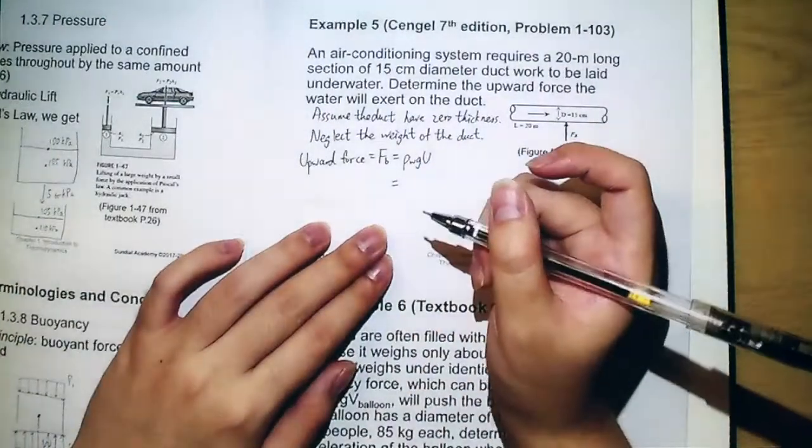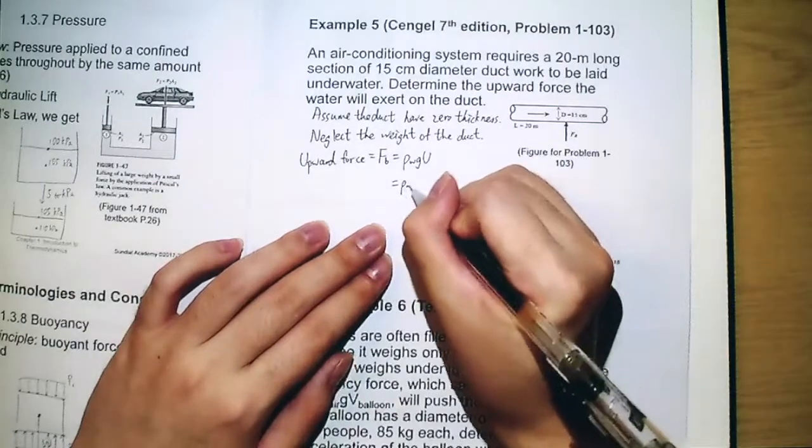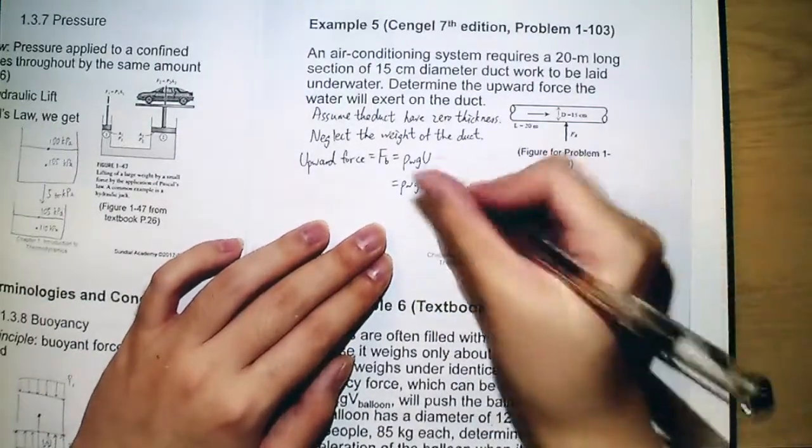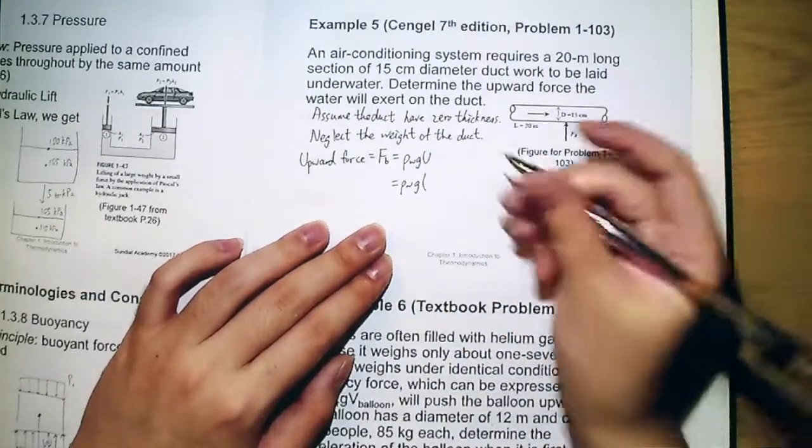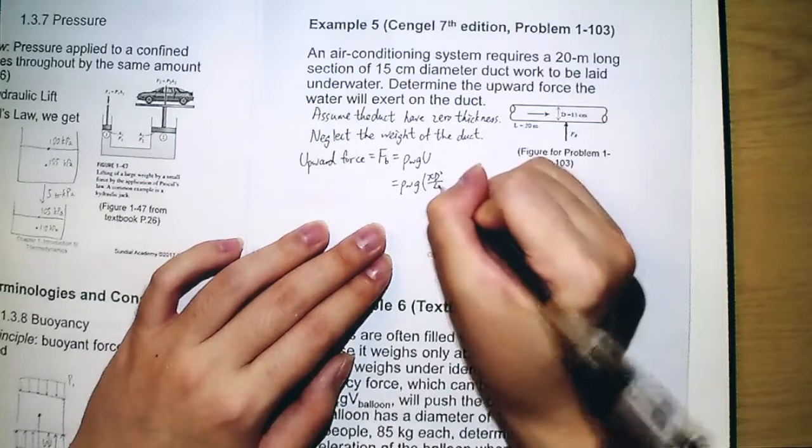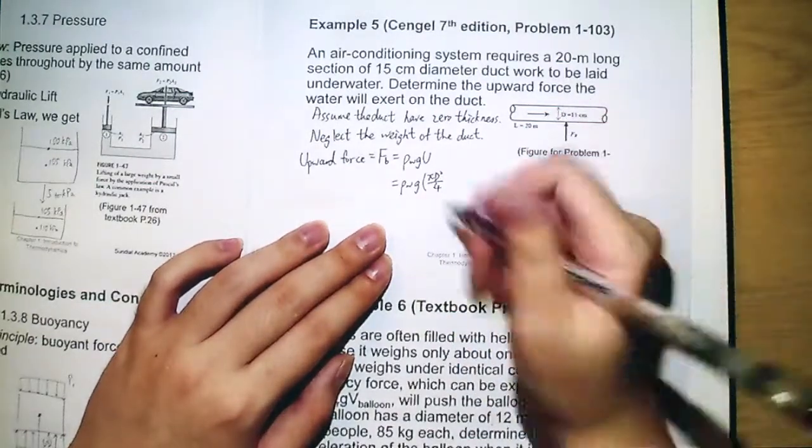And after that we will substitute some values. The volume, because it is a cylinder, will be equal to the area of that circle, πd² divided by 4 because we are given the diameter, times L.